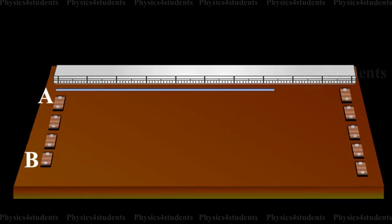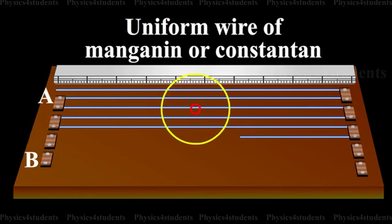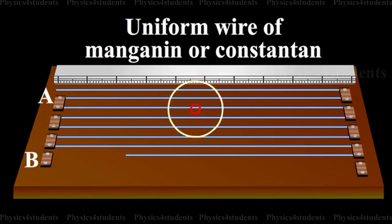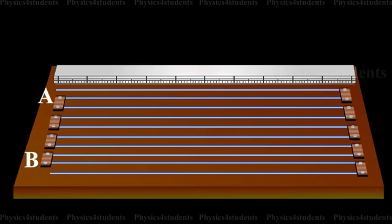It consists of a 10-meter long uniform wire of manganin or constantan stretched in 10 segments, each of 1 meter length. The segments are stretched parallel to each other on a horizontal wooden board.